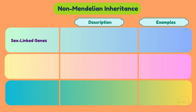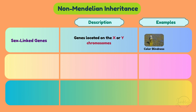Sex-linked genes are genes located on the X or Y chromosomes. For example, colorblindness is X-linked, making it more common in males due to their single X chromosome. Another example is hypertrichosis pinnae auris, a Y-linked trait causing excessive hair growth on the outer ear, seen only in males.